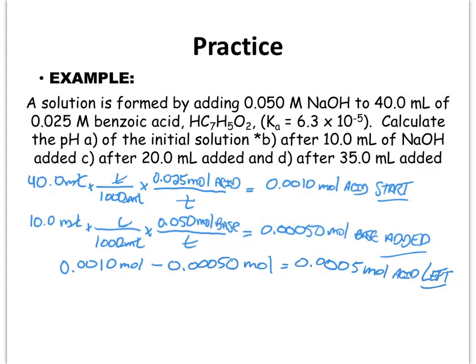Because the reaction is a 1-to-1 ratio, if that much acid was destroyed, I also formed 0.00050 moles of the conjugate. It's very important to understand that this particular part of a weak-strong problem is a buffer. The definition of a buffer is when you have a weak acid or base and its conjugate present. The conjugate salt formed from the neutralization allows us to form this buffer.